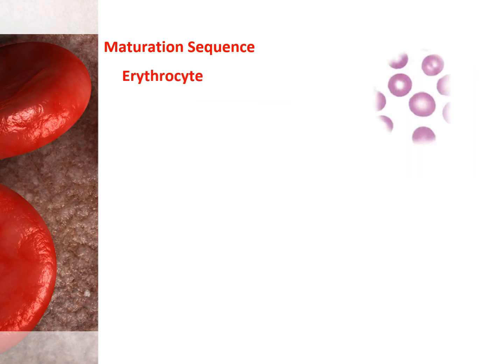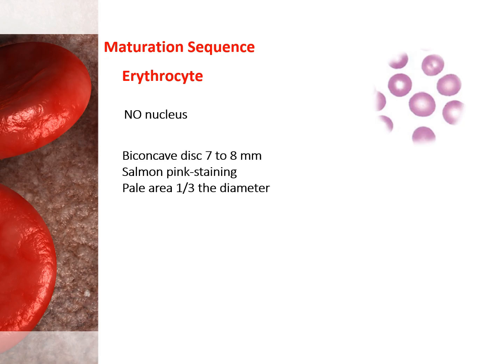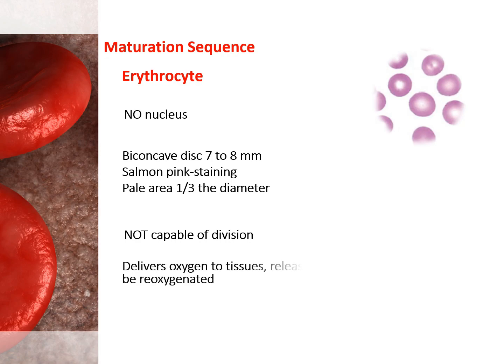The mature erythrocyte has no nucleus present. The mature circulating erythrocyte is a biconcave disc measuring 7-8 mm in diameter on a stained blood film. It appears as a salmon pink staining cell with a central pale area that is about one-third the diameter of the cell. The erythrocyte cannot divide. Mature red blood cells remain active in circulation for approximately 120 days. The mature erythrocyte delivers oxygen to tissues, releases it, and returns to the lung to be reoxygenated.